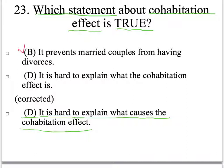很有誘答力的 B 說 It prevents married couples from having divorces，看起來好像是對的，因為一般人認為先同居相處過會比較好。但是看到第三段，文章提到 But that belief is contradicted by experience，也就是說先同居並不能達到 prevents married couples from having divorces，所以不能選 B。